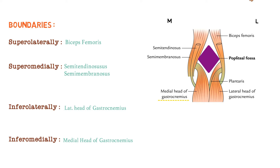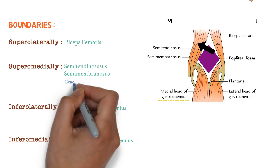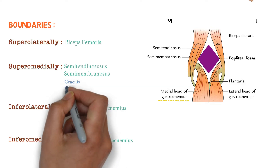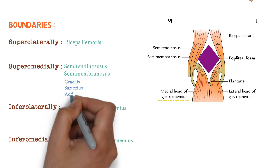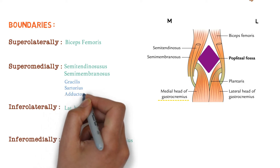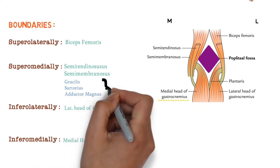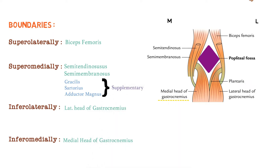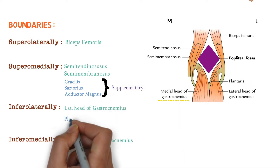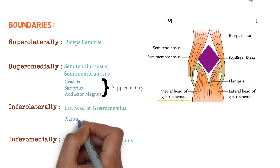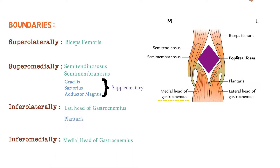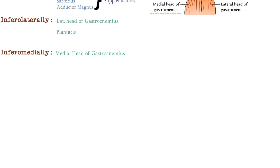Now look over here. In the superomedial part, with semitendinosus and semimembranosus, we also have supplementary muscles like gracilis, sartorius, and adductor magnus. The inferolateral boundary is supplemented by the plantaris muscle. So these are the boundaries of Popliteal Fossa.